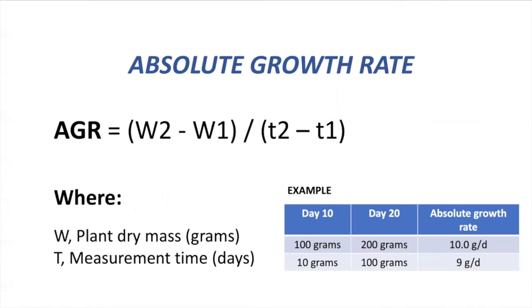Here is the formula we can use to calculate the absolute growth rate. To make this calculation, we first need to have at least two measurements from different days. For example, here I have two different measurements: one at day 10 and another one at day 20. By applying the formula, you will be able to know the rate of growth. This is an excellent tool to compare any treatment or new management applied in a greenhouse or growing system in order to see how different variables can affect plant growth.